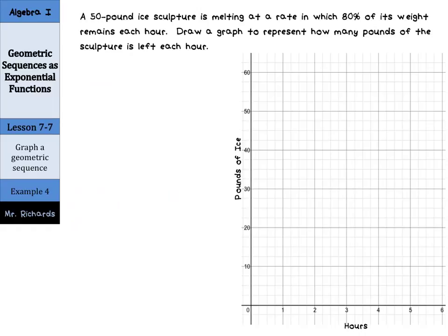Now let's graph a geometric sequence. A 50-pound ice sculpture is melting at a rate in which 80% of its weight remains each hour. Draw a graph to represent how many pounds of the sculpture is left at each hour. At hour zero, we have 50 pounds. We can make a table to help us graph the rest. We'll have hours as our x, and pounds of ice as our y. For hour number one, this 80% is our common ratio. We can take the 50 pounds we had when we started and multiply that by the 80%, which we'll represent as 0.8. 50 multiplied by 0.8 is 40 pounds.